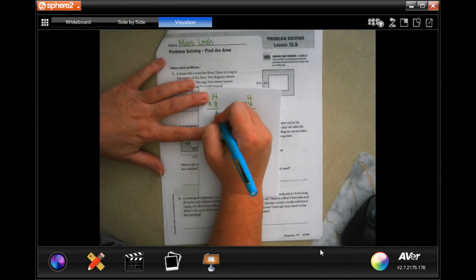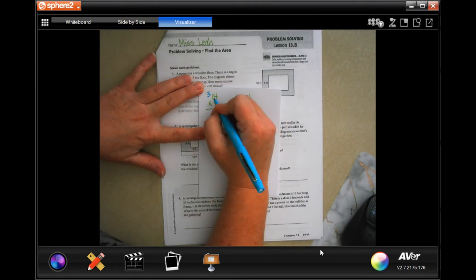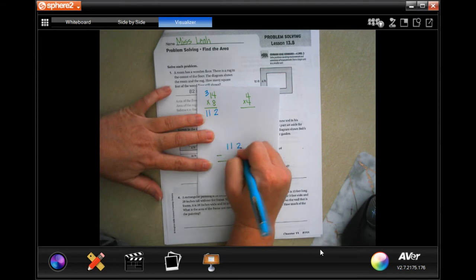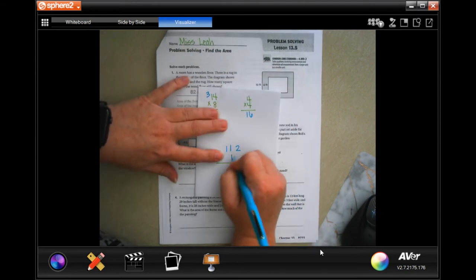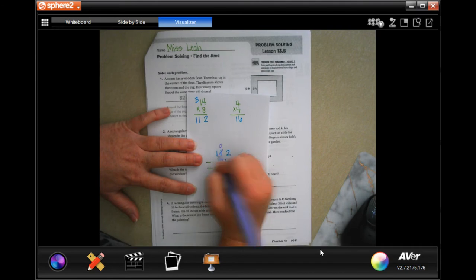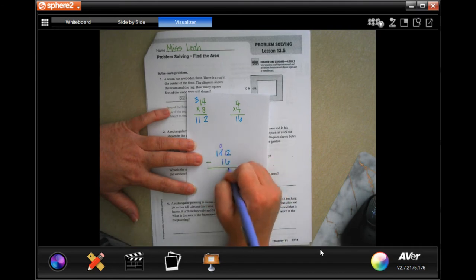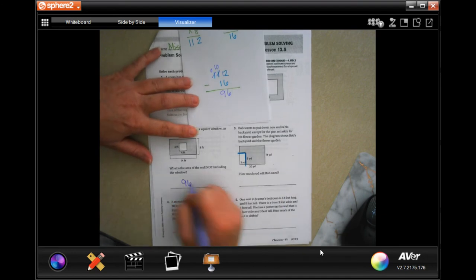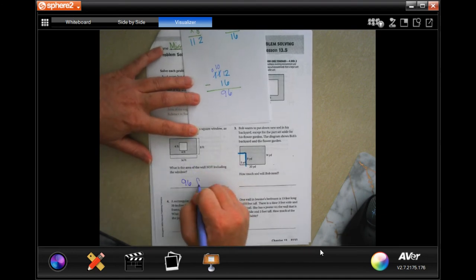So, 8 times 4 is 32, carrying a 3. 8 times 1 is 8, plus 3 is 11. So we have 112, and we're going to take away 4 times 4 is 16. So, 2 can't take away 6. I'm going to borrow 1. 12 minus 6 is 6. 0 can't take away 1. I'm going to borrow 1 again. And 10 minus 1 is 9.